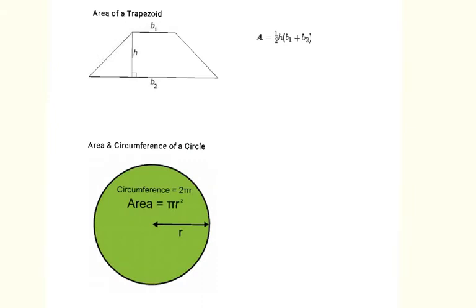Other types of questions you could see in this section involve area, perimeter, and circumference. We need to know those formulas. Sometimes they give you the formulas on the EOI, and sometimes they don't. The area of a trapezoid equals one-half times the height times the sum of the bases. The height is how far apart the two parallel sides are, and the bases are the lengths of those parallel sides.